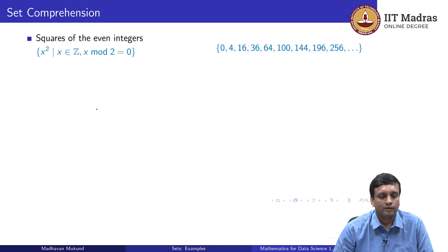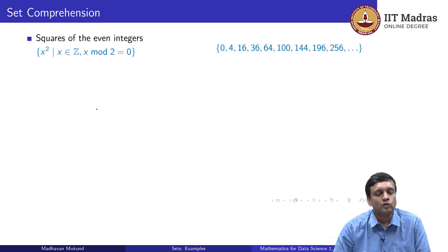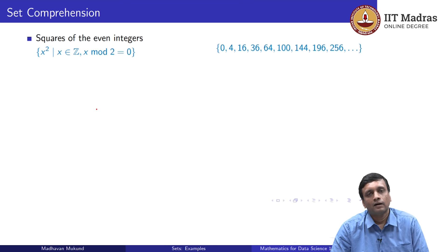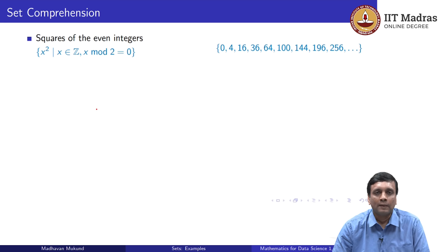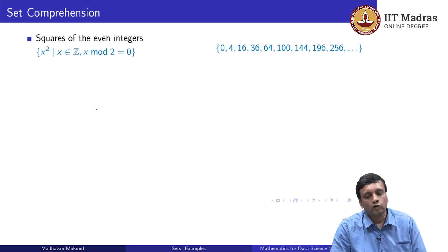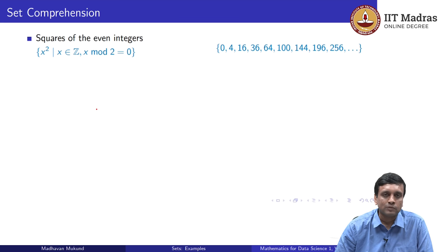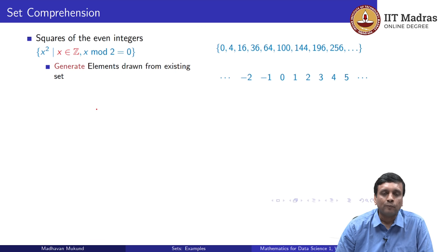Now let us look at the set comprehension notation, which we use when we have to describe infinite sets that cannot be written down explicitly. For example, suppose we want to write down the set of all squares of the even integers. In set comprehension notation, we first have a generator — a generator says we are taking elements from an existing set. We already have the set of integers and we try out every integer in it, so x ∈ ℤ generates this set.